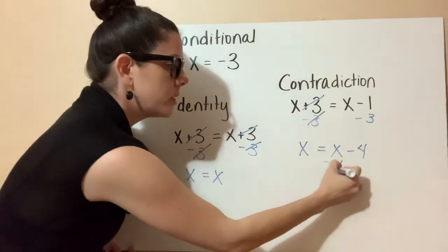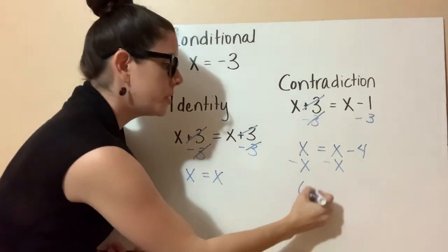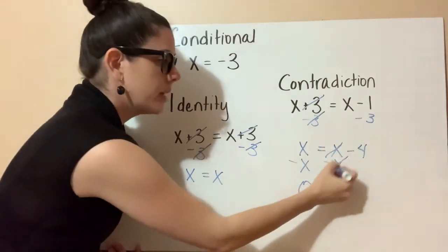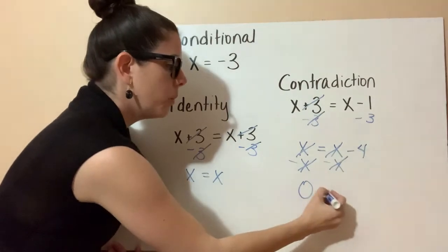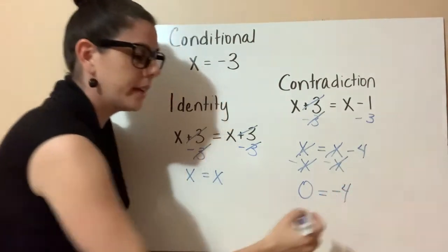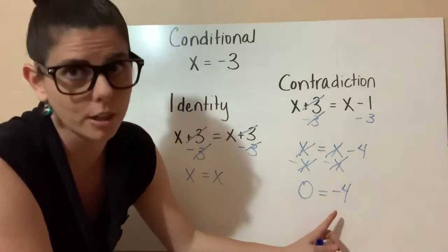But this is what we're going to do. This is a positive x. So let's subtract x from both sides. x minus x equals 0. So this is going to cancel out. These will cancel out. The only thing we're left with on the other side is negative 4. So basically you're coming up with 0 equals negative 4, and that is not true.